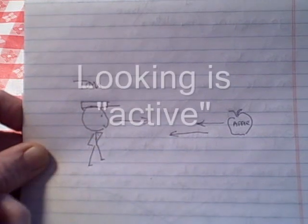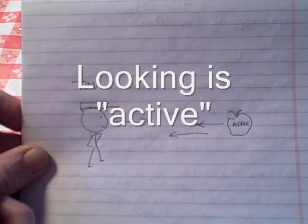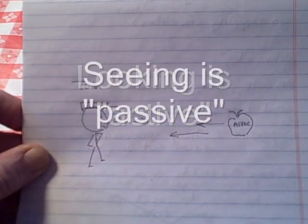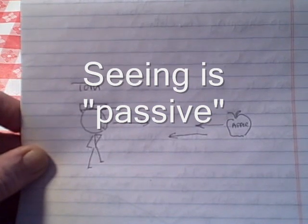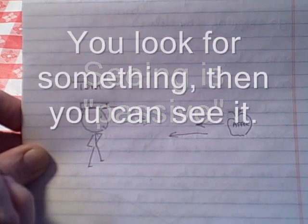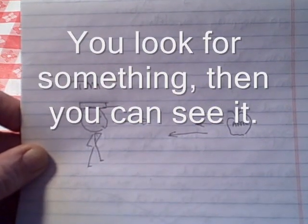Looking is active. Seeing is passive. You look for something, then you can see it.